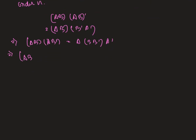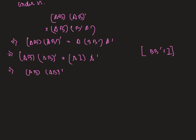Continuing the proof: AB times (AB)-transpose equals A times I times A-transpose, since B times B-transpose equals I, as B is an orthogonal matrix. And then A times A-transpose also equals I. Therefore this implies that AB is an orthogonal matrix.